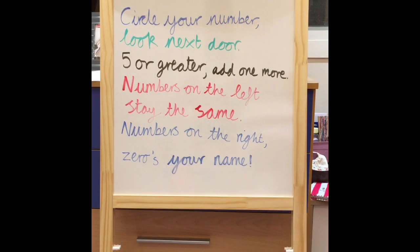This is the rhyme that I use when rounding. Circle your number, look next door, five or greater, add one more. Numbers on the left stay the same. Numbers on the right, zero is your name. In this video I'm going to show you how to use this rhyme to help you round numbers.